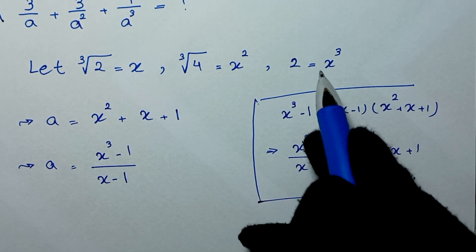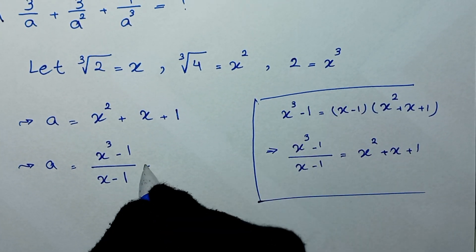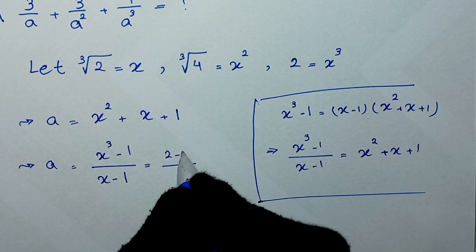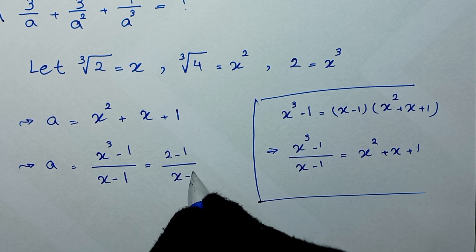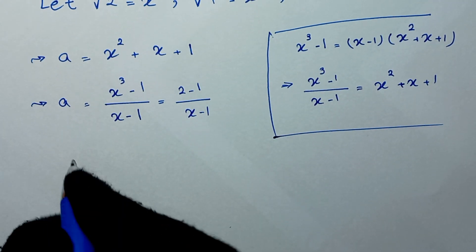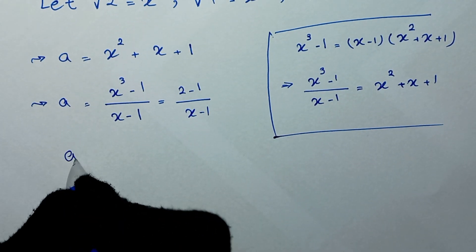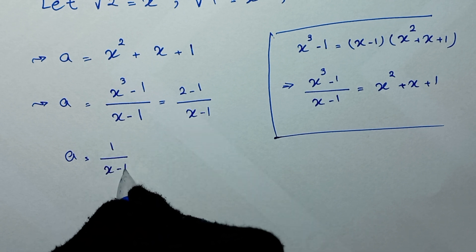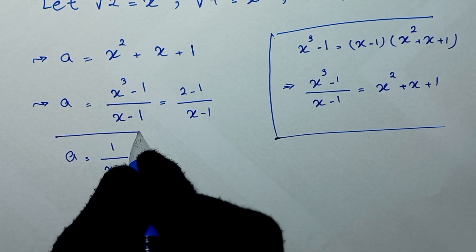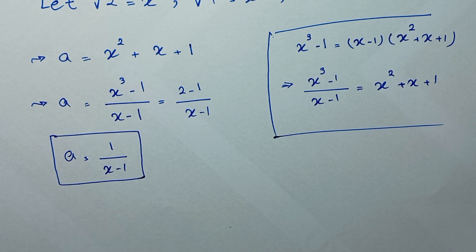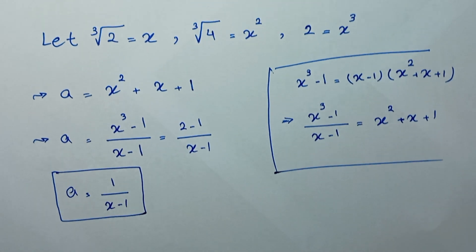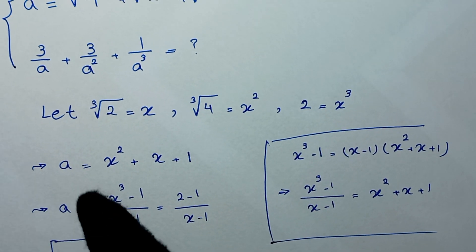Here x cubed is 2, so we write 2 minus 1 over x minus 1. That gives a equals 1 over x minus 1. In the next step we write our expression that was 3 over a plus 3 over a squared plus 1 over a cubed.